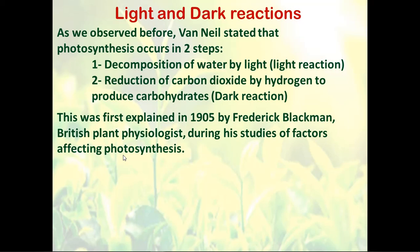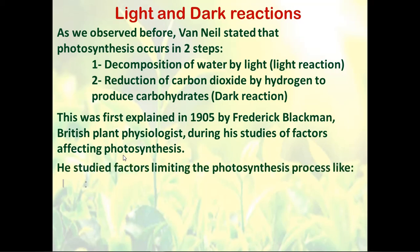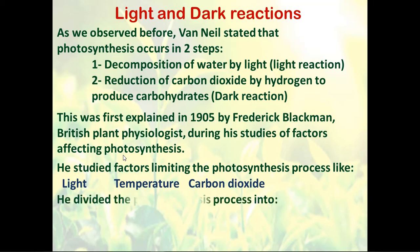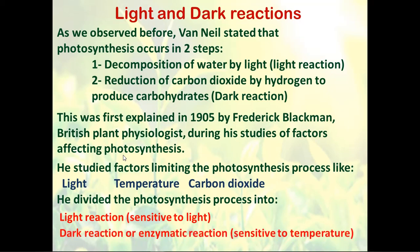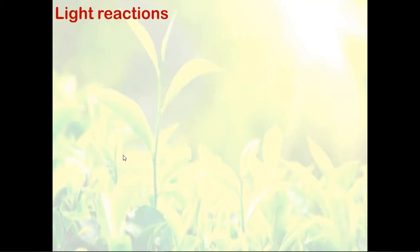Blackman found that there are three limiting factors: light, temperature, and carbon dioxide. According to these factors, he divided the photosynthesis reactions into the light reaction, which is sensitive to light, and the dark reaction — also called the enzymatic reaction — which is sensitive to temperature.